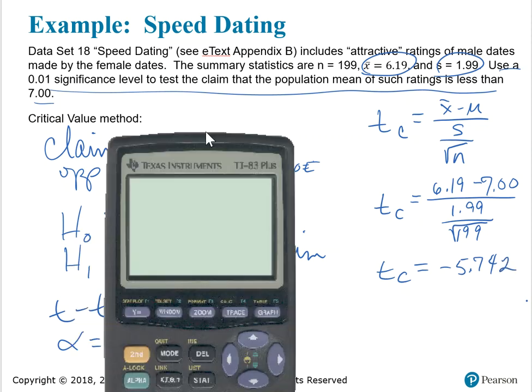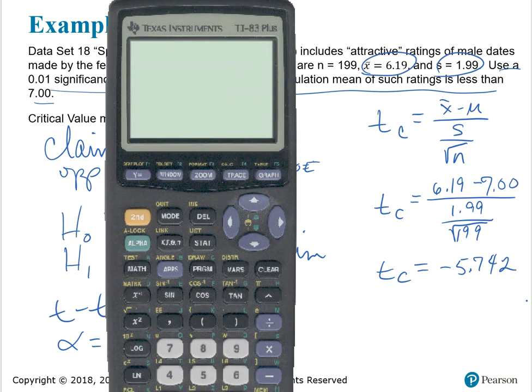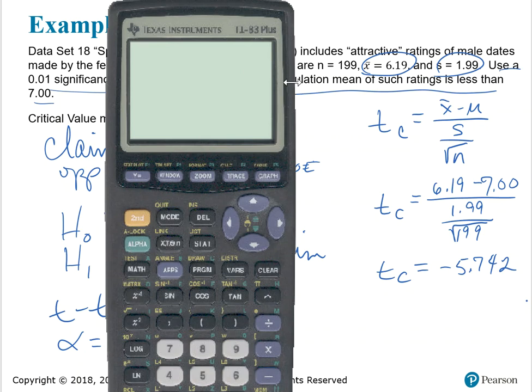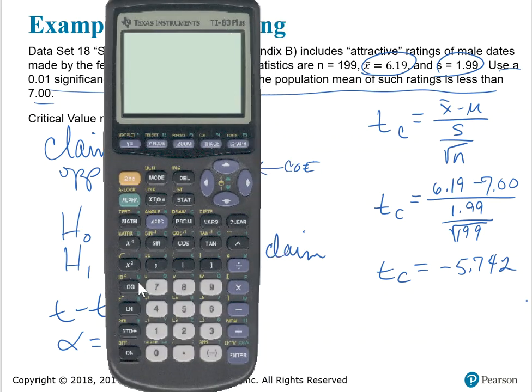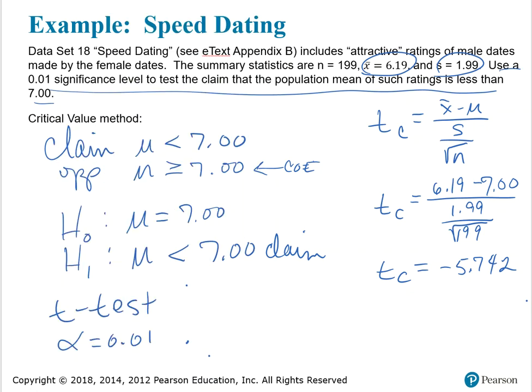Let's do that calculation real quick. Here is my virtual TI-83. I'm going to use parentheses around the numerator to make sure that the calculator does the subtraction in the top, divided by, and I need parentheses around the bottom to make sure I get the quotient as the divisor. That should give me negative 5.742 for my calculated test statistic.